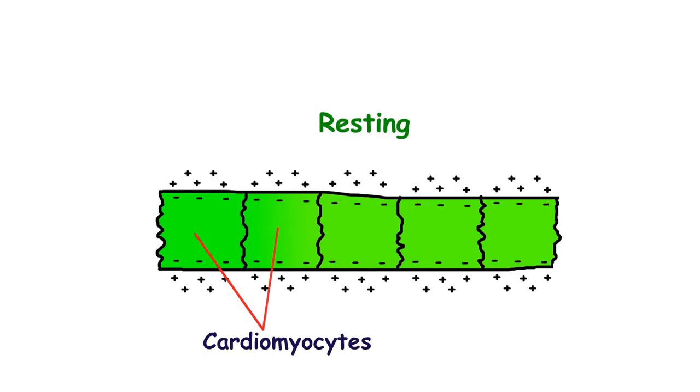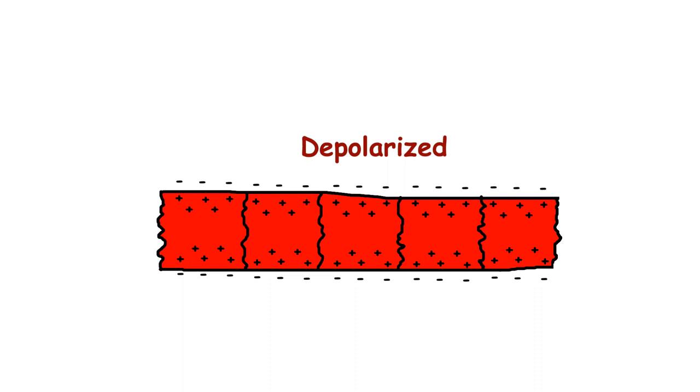To better understand this, let's imagine only one pair of electrodes, a positive and a negative one. Cells at rest have a negative charge when the charge on the outside of the cells is positive. During depolarization cells become charged positively and the charge on the outside of the cell is negative.